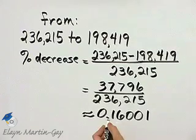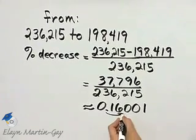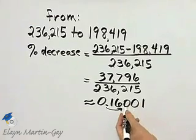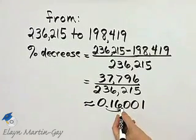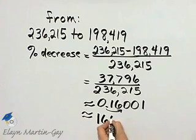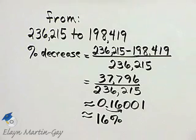So as a percent, we move the decimal place two places to the right, and since these are both zeros to the nearest tenth, it's 16.0 percent, which I can just write as 16 percent. So the percent decrease is approximately 16 percent.